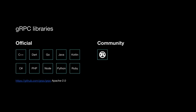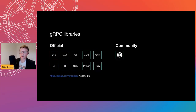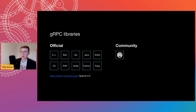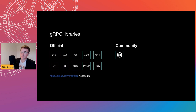gRPC supports many official languages — I think I listed all of them. For all those languages, you will find gRPC libraries that not only generate code for you but enable all the other cool features gRPC brings. Unfortunately for us in Rust, there's no official library yet, but in the Rust community we have two libraries which are also very special.